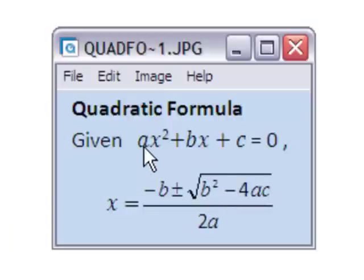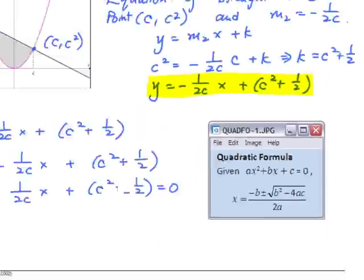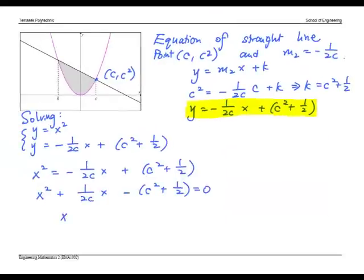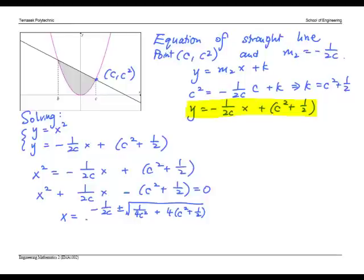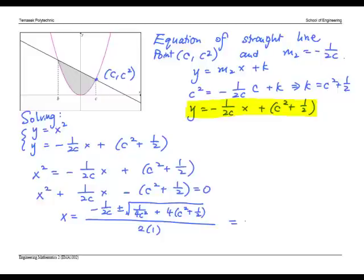We may use the quadratic formula. So this gives x equals, which simplifies to two answers, minus 1 over 2c minus c or c. So obviously, this value is equal to b since b and c are the answers to the intersection points of the curves.